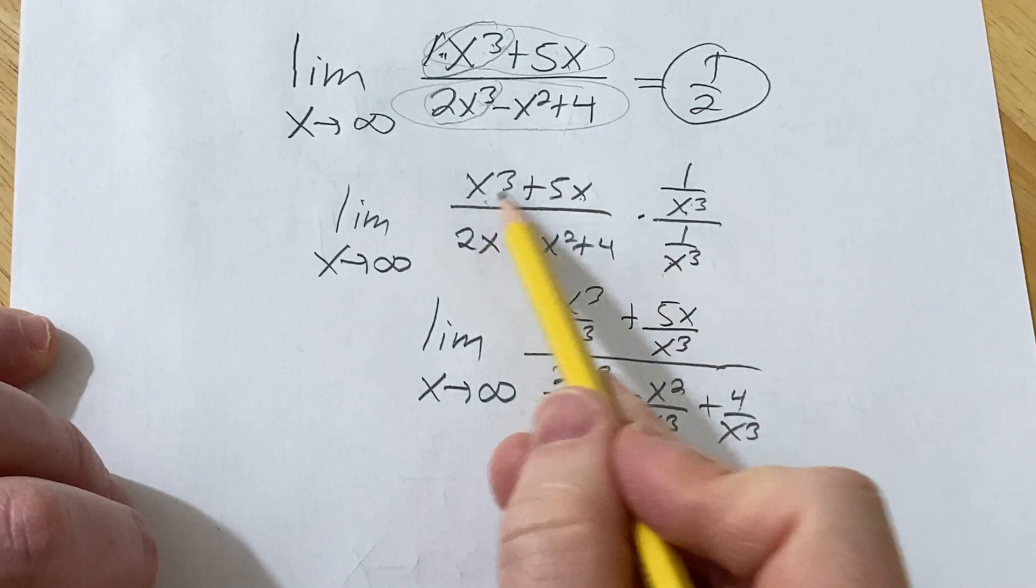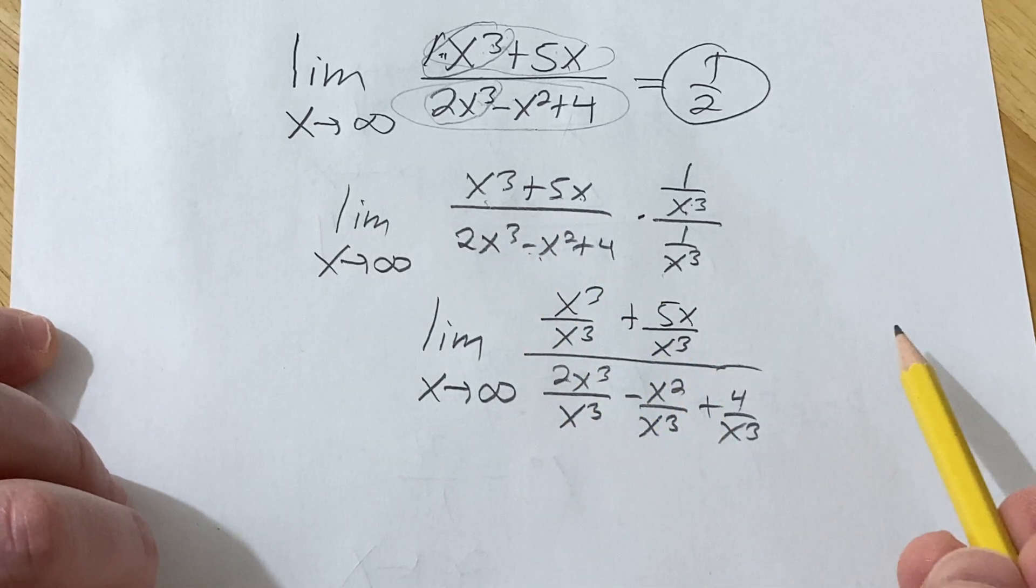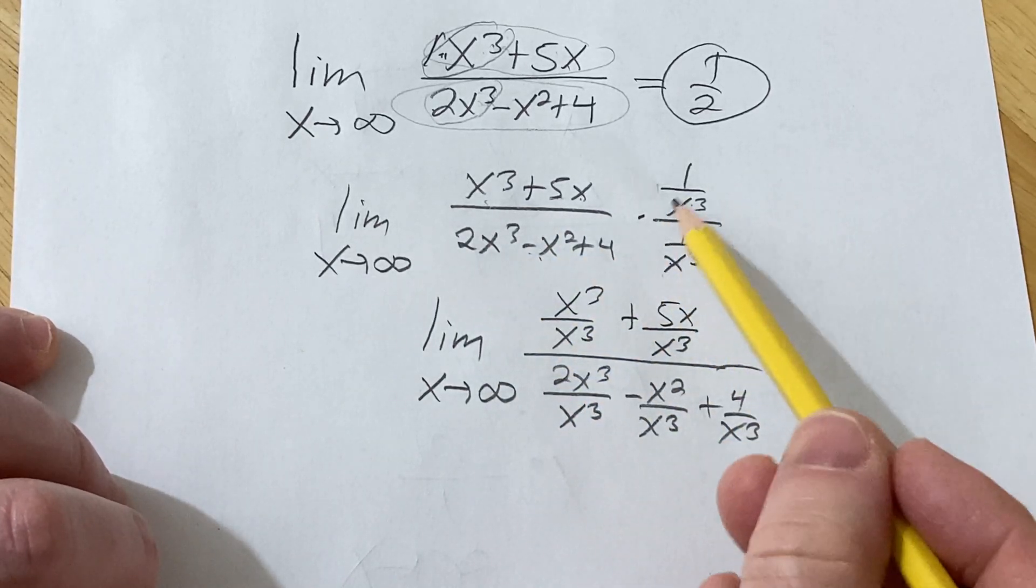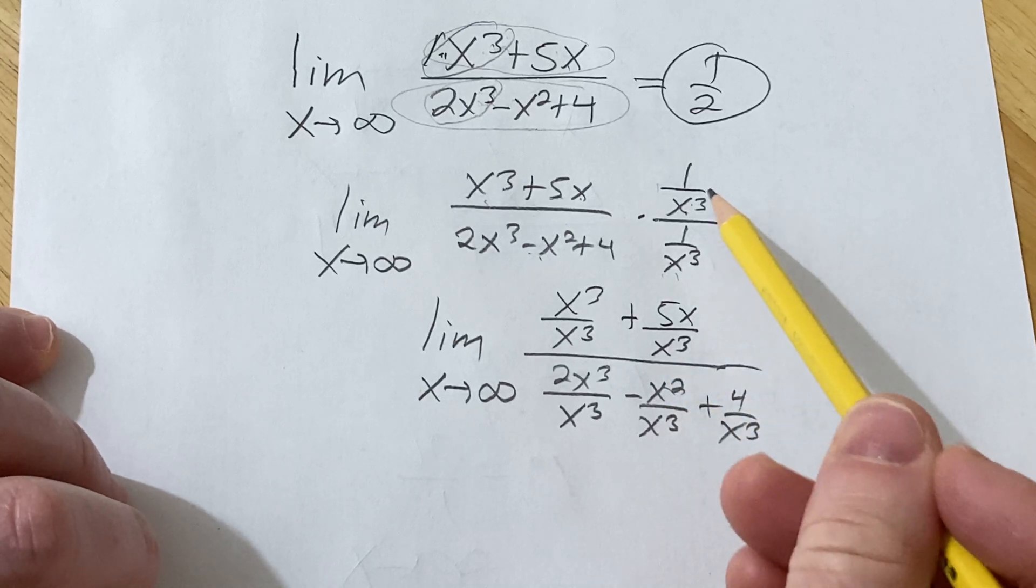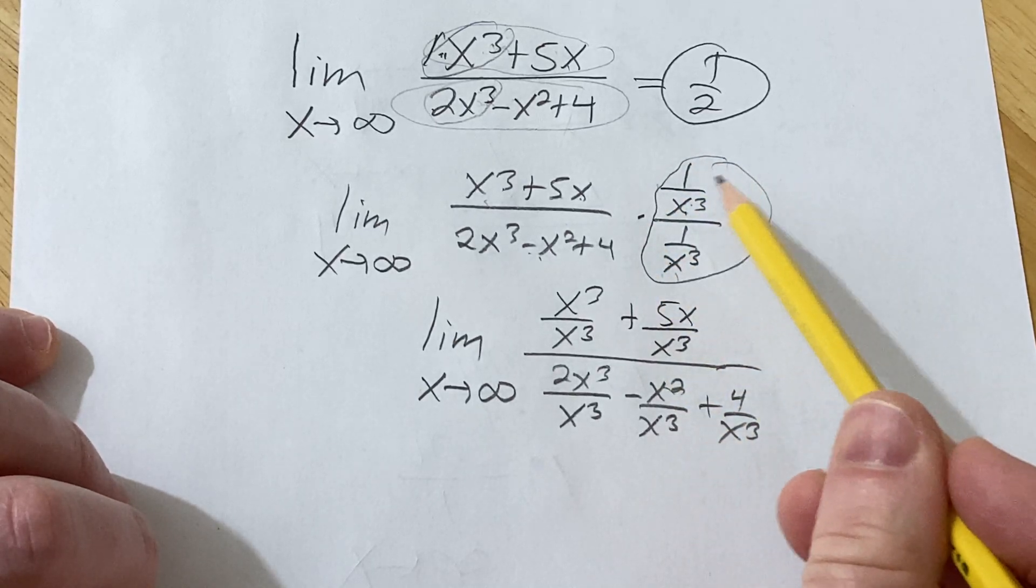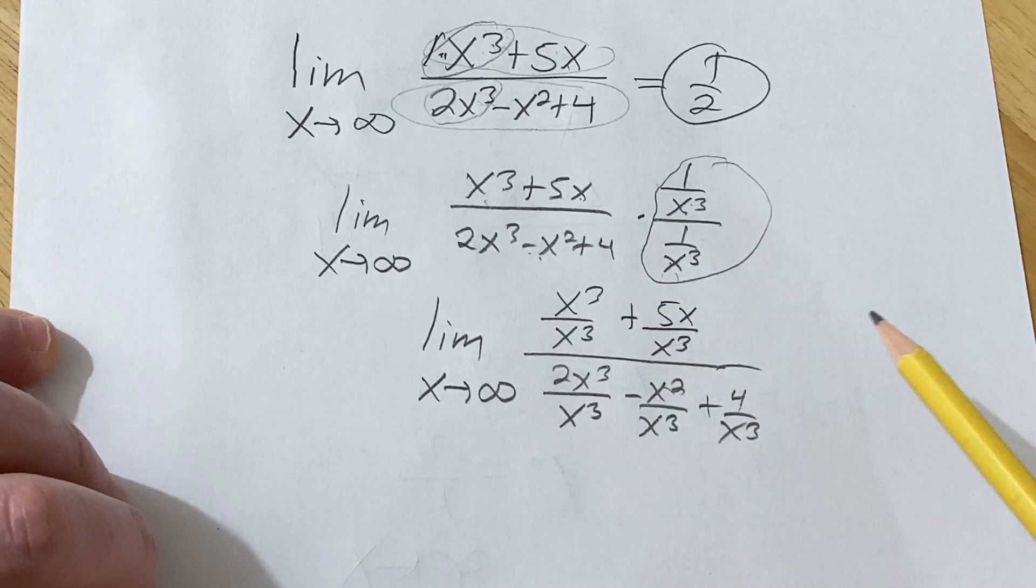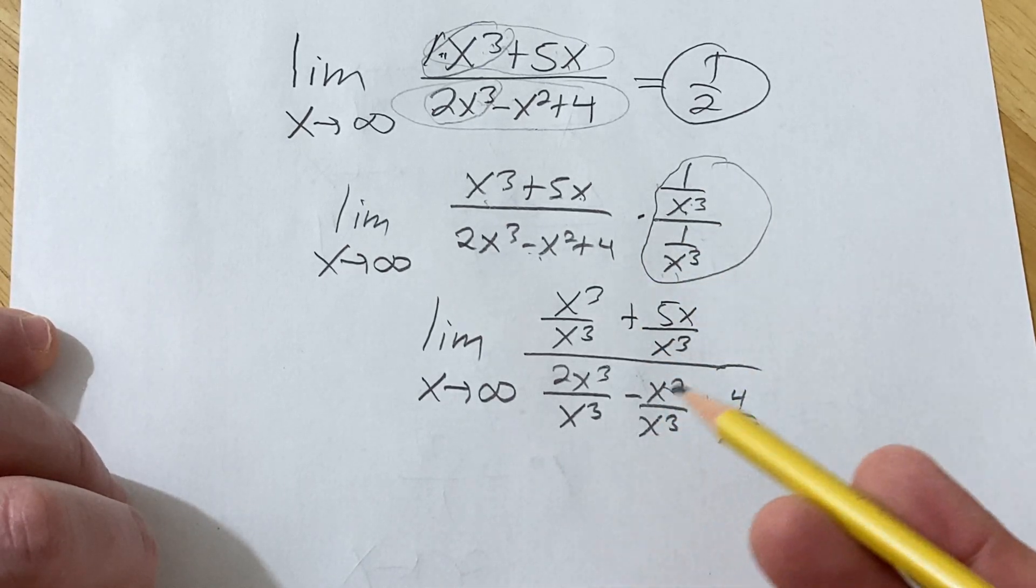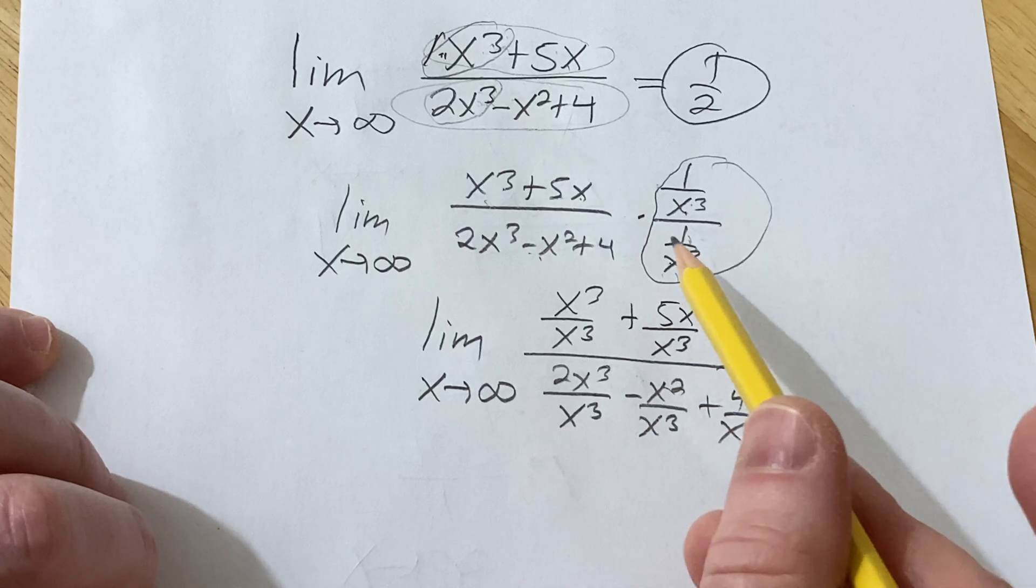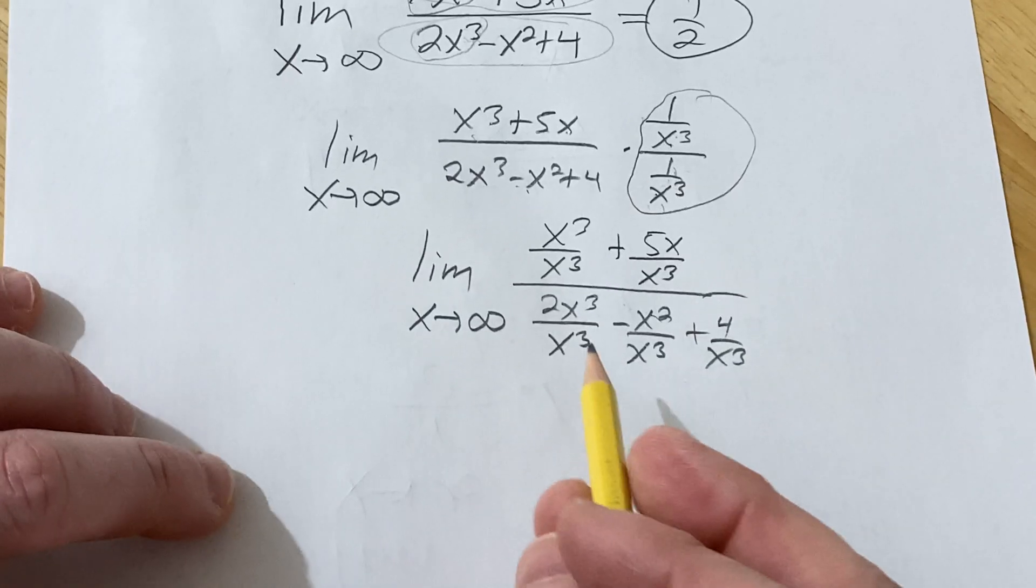Again, just putting an x cubed basically under each term of this limit. You can actually skip this step and just go straight to this. I just showed you this step to show you why it's actually mathematically okay to do it. Because basically we're just multiplying by 1. A lot of people just go straight here. But this is why you can do it. It's because we're multiplying by 1. So this is now the limit.